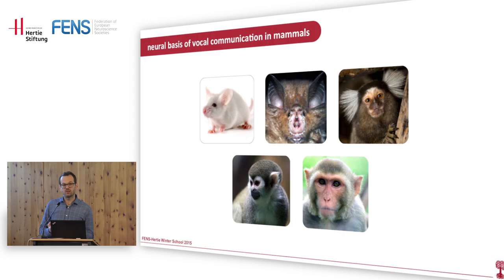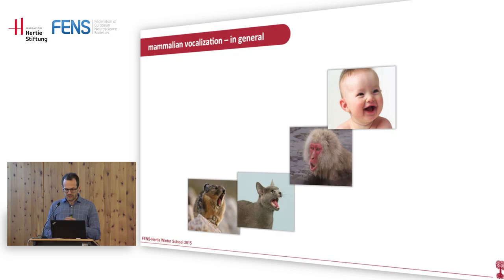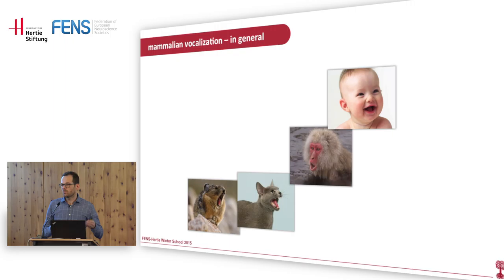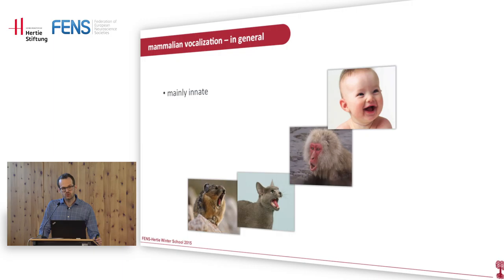We first have to define what mammalian vocalization actually is. This is particularly important because in recent months several papers have come out showing mammals with vocal learning very similar to human speech. We need to be clear about what mammalian vocalization is from a neurophysiological basis, and what parts we might be able to use as a model for parts of human speech.